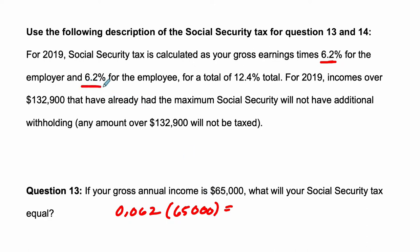We can ignore the 6.2% paid by the employer, because here we're just looking at the 6.2% paid by the employee. Half is paid by the employer, half is paid by the employee — we're just paying one of those halves.